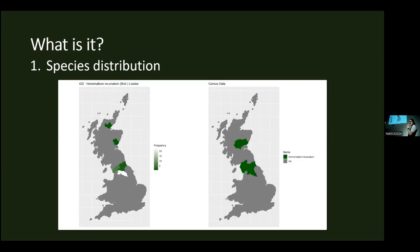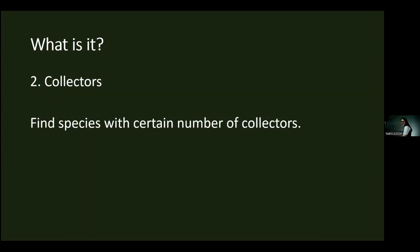The second analysis looks at collectors. This is basically to show if there is a collector bias — so if you have a species that only has one collector, maybe they've got some of them wrong.